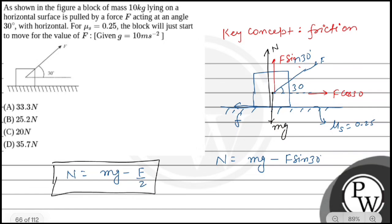We all know friction is less than or equal to μs times N. As the force increases, friction increases to a certain value, and the maximum value of friction is called limiting friction.